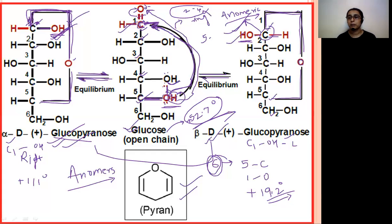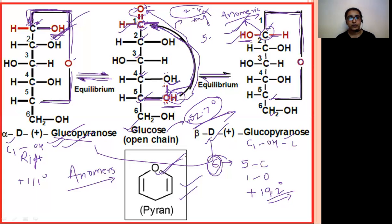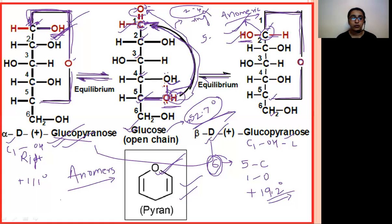So remember: two cyclic forms — alpha D-glucose and beta D-glucose — exist in equilibrium with the open chain structure in aqueous solution. These structures are very important to learn: glucose open chain structure, fructose open chain structure, D-sugar and L-sugar, glyceraldehyde structure, alpha D-glucopyranose, and beta D-glucopyranose. Also practice converting Haworth projection from Fischer projection. Keep practicing, see you in the next lecture. Keep learning, bye-bye.